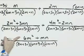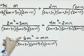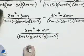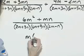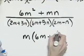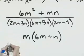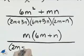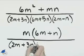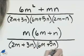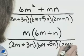We can factor an m out of this numerator. Let's do that to be sure that we are done and cannot simplify further. Factoring an m out gives us 6m plus n. That quantity will be multiplied by m. And the denominator, 2m plus 3n times 6m plus 5n and 2m minus n.